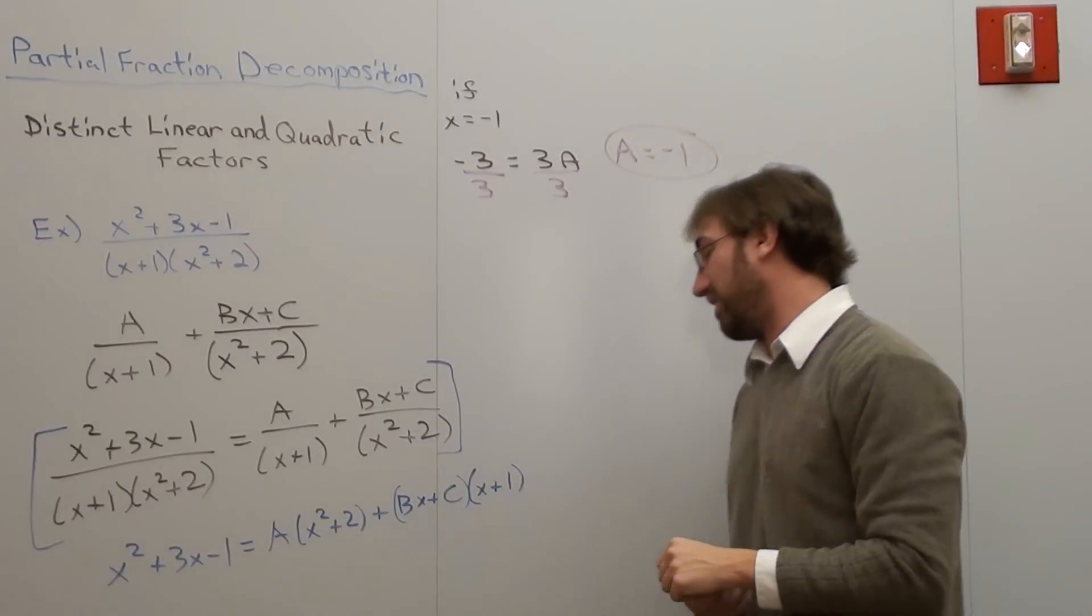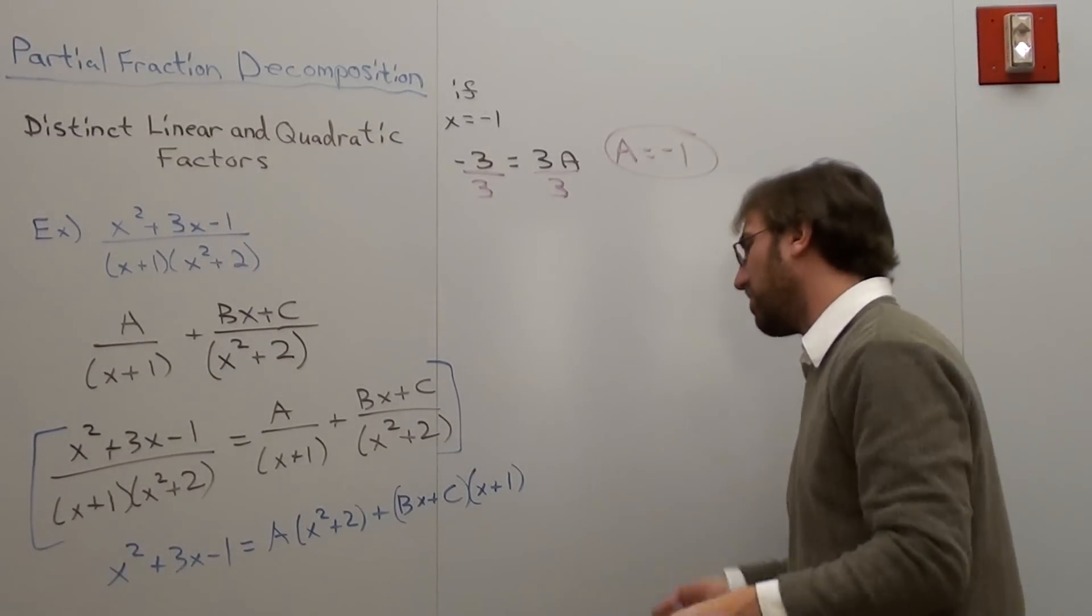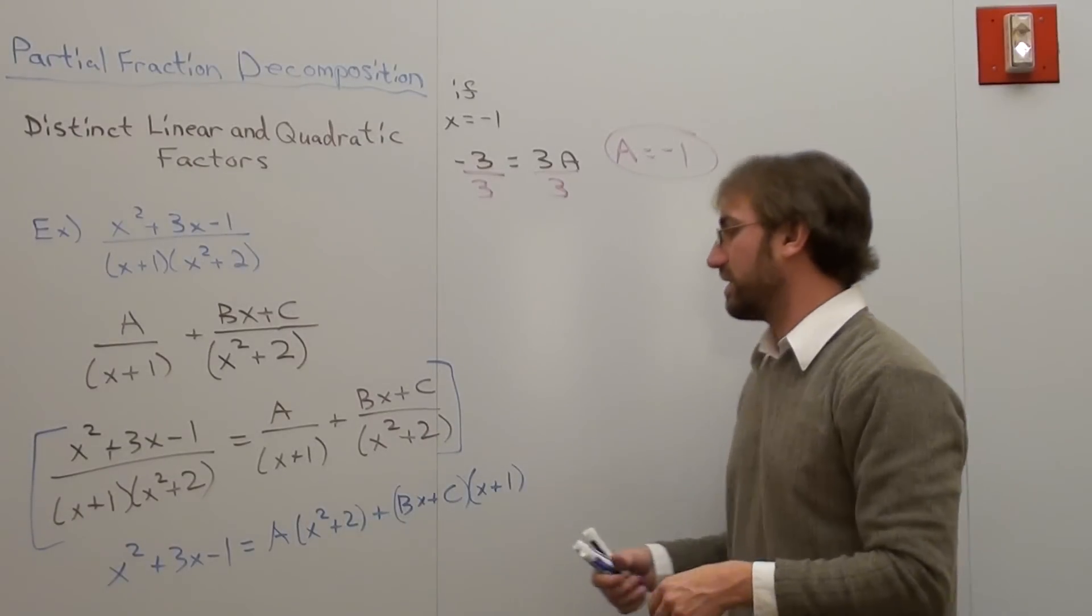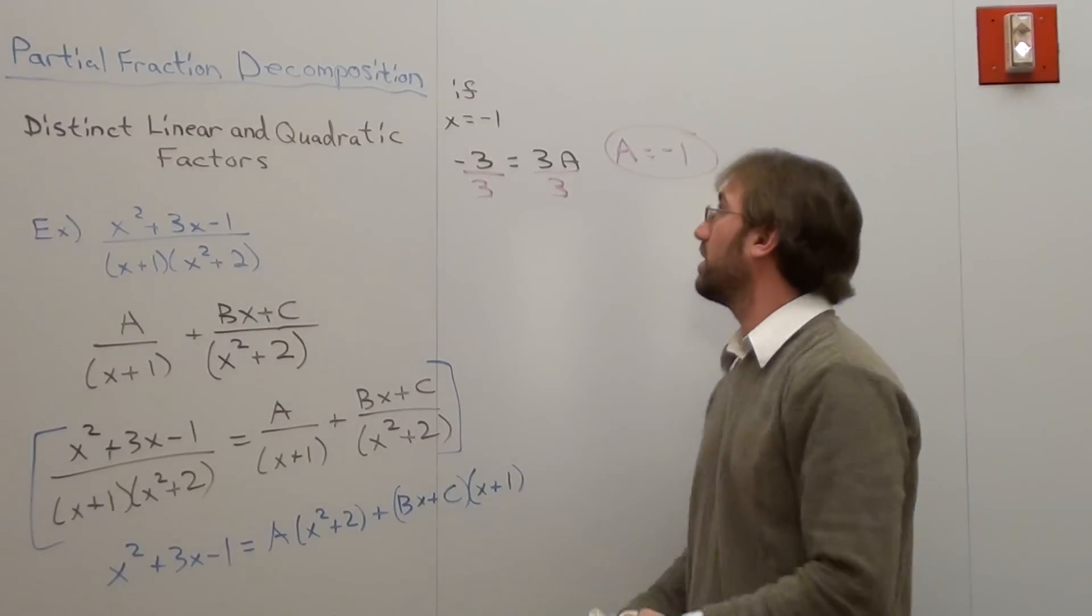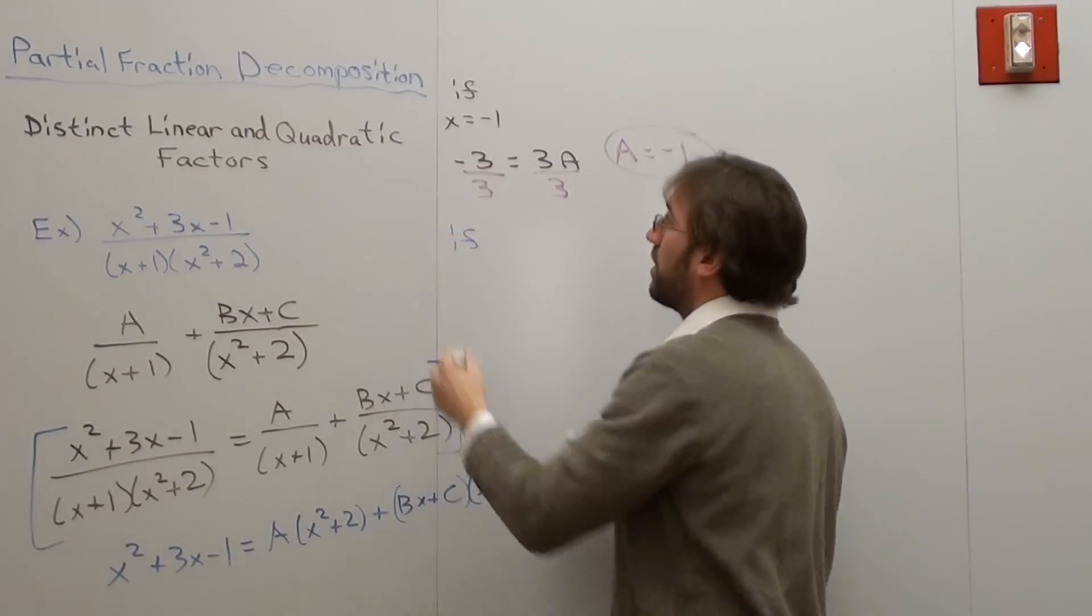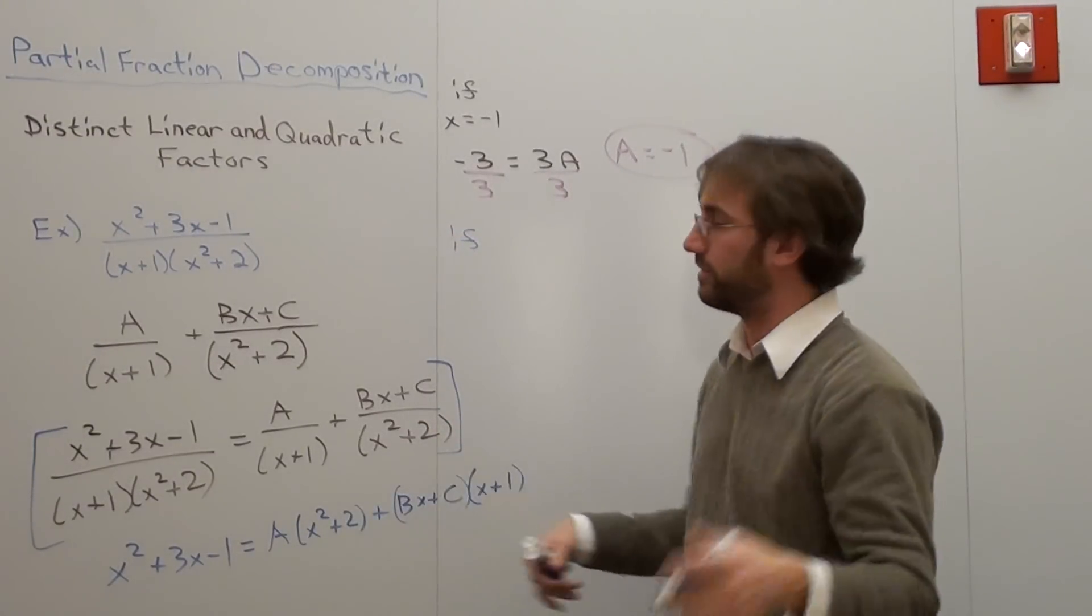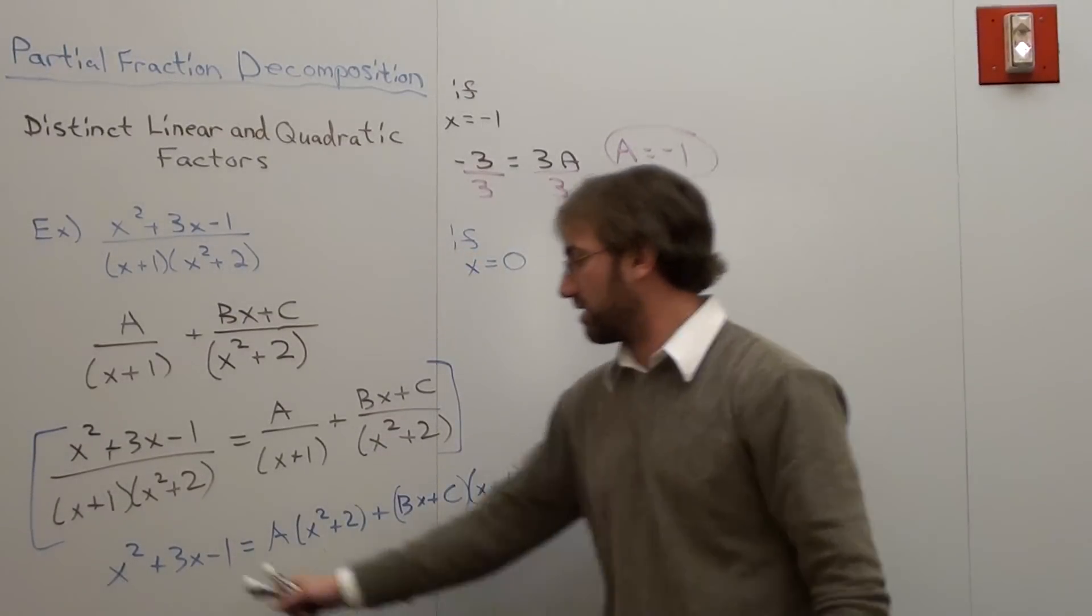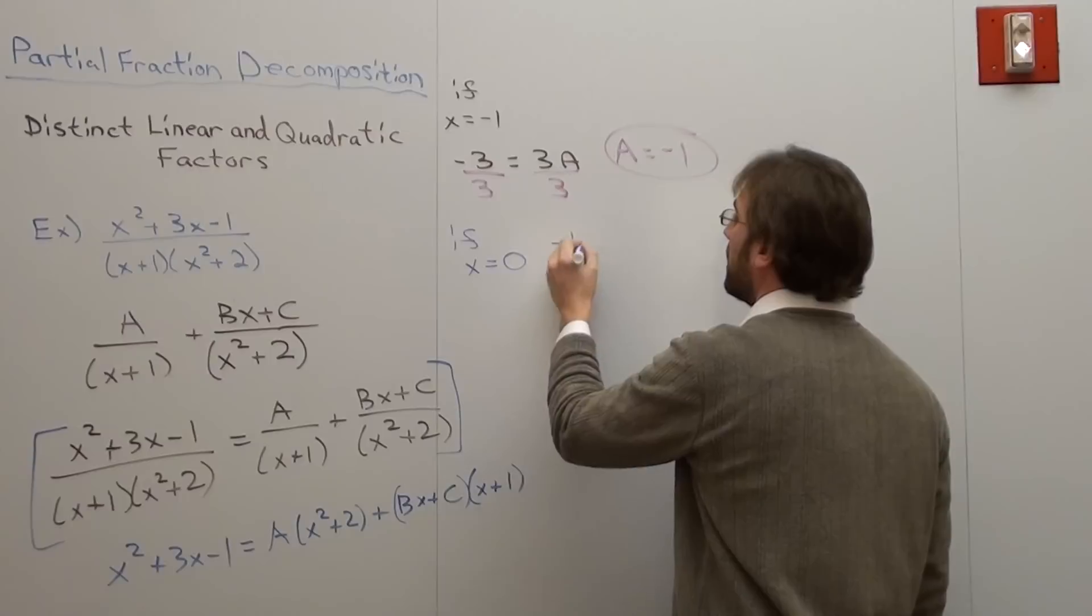So when I substitute in x equals negative 1, I get a equals negative 1. Well, now I've got to figure out another value I can go ahead and substitute in. There's a host of values you can plug in if you want to. I would suggest 0, because 0 is always the easiest one. So when we do if x equals 0, there are no other values that will cancel out all the terms except for 1, so you've got to do what you've got to do.